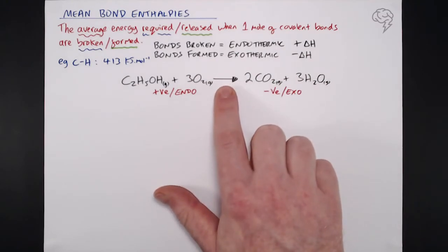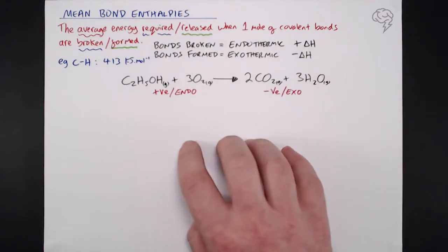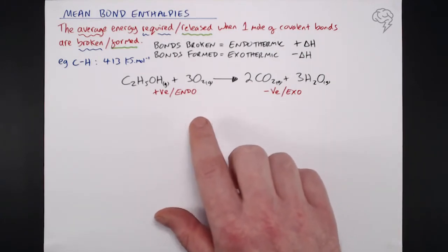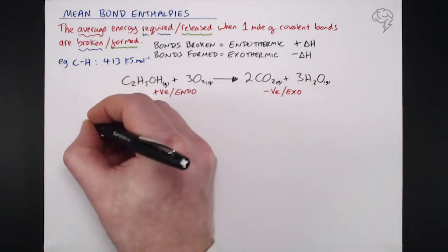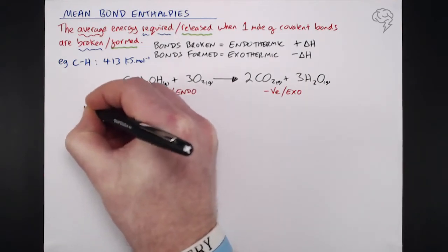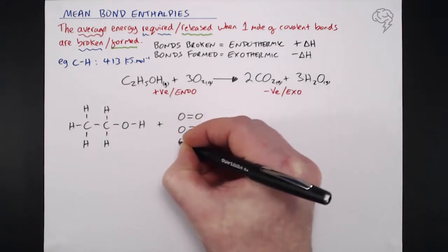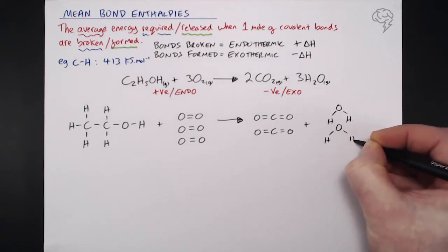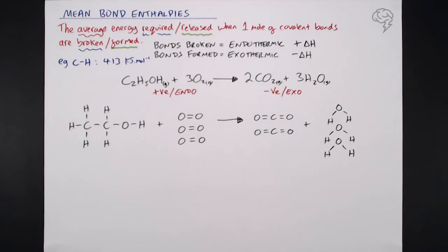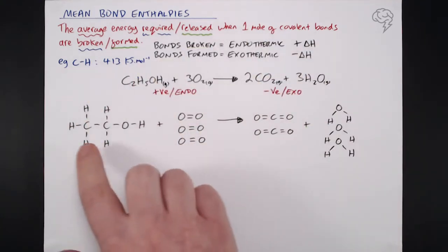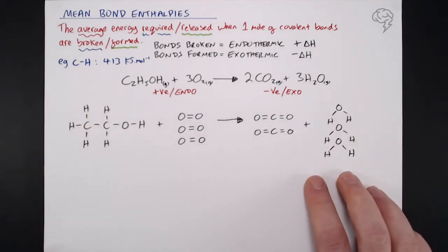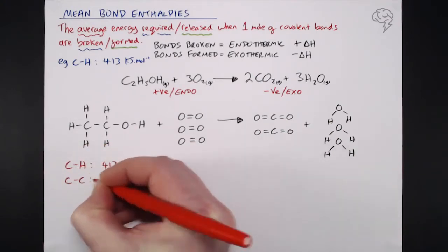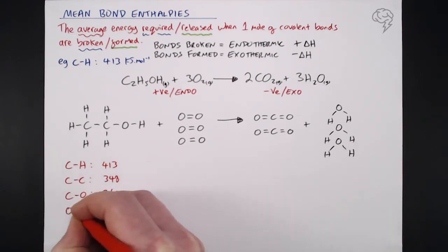If in doubt, draw it out. If the molecules aren't already drawn in the exam question, draw each one showing all the covalent bonds — that's the only way to get this right. So for ethanol plus oxygen giving carbon dioxide and water, I'm drawing out the appropriate number of molecules to clearly show every individual bond involved.